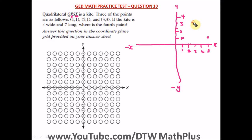And the last given point is x at three and y at three, which goes right here. So we have all three points plotted on the coordinate plane.